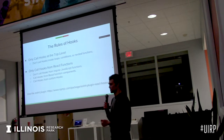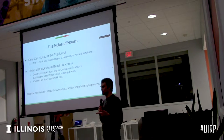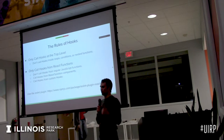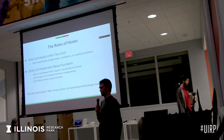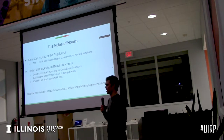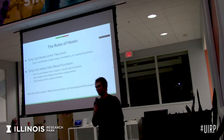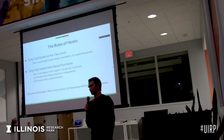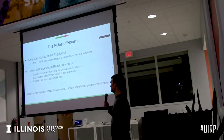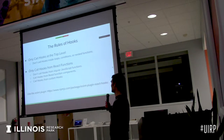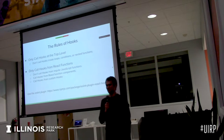In React function components and custom hooks — how do you know that something is a custom hook? You should always prefix your custom hooks with the 'use' prefix. Then you can use the fancy ESLint plugin that React has made, and it will say, 'Hey, you're using hooks in the wrong place,' or 'Hey, you're using hooks in a conditional.'